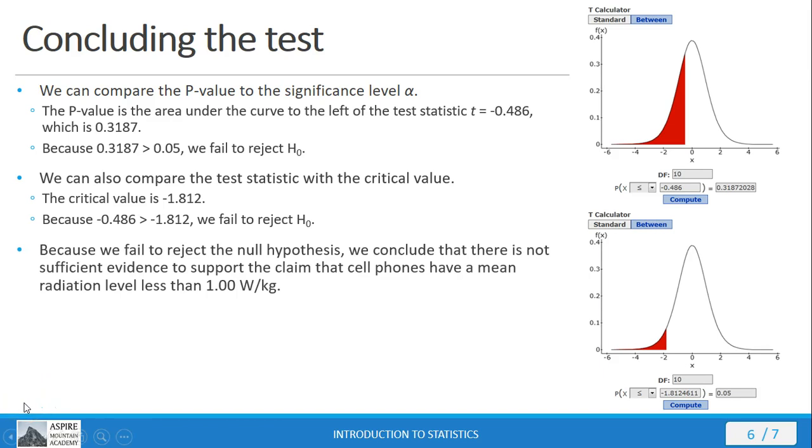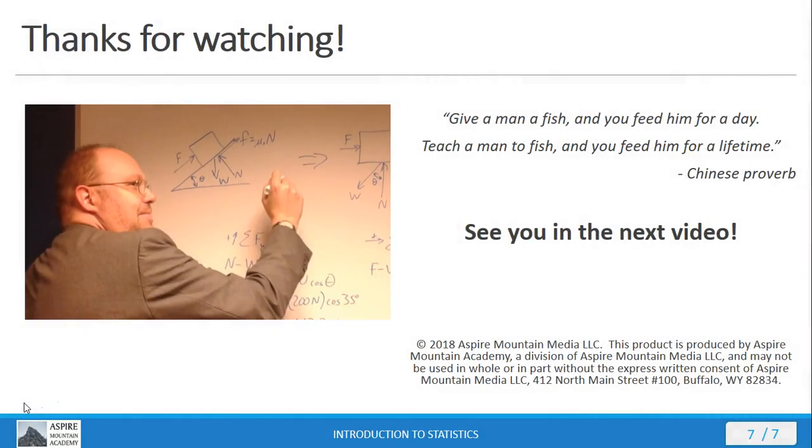Because we fail to reject the null hypothesis, we conclude there is not sufficient evidence to support the claim that cell phones have a mean radiation level less than 1 watt per kilogram. That brings us to the end of this mini-lecture. I hope you found it helpful. You can find more mini-lectures at AspireMountainAcademy.com. Thanks for watching. I'll see you in the next video.